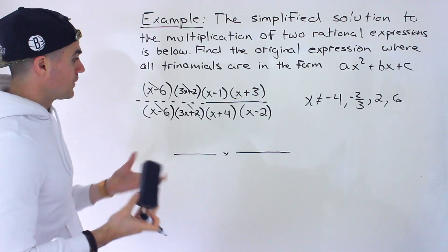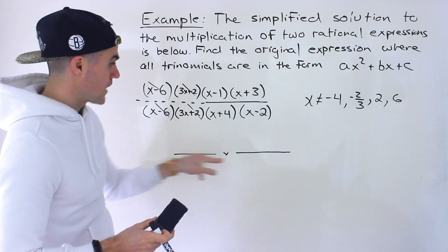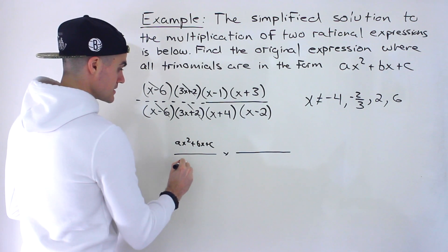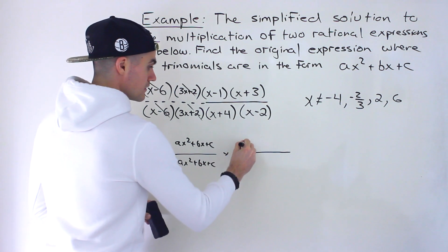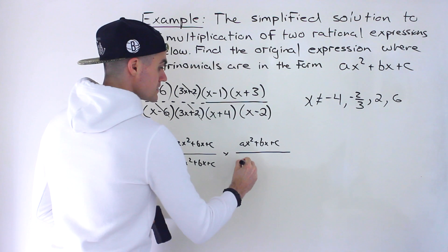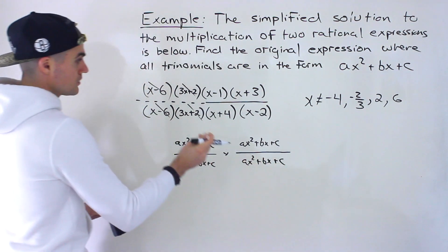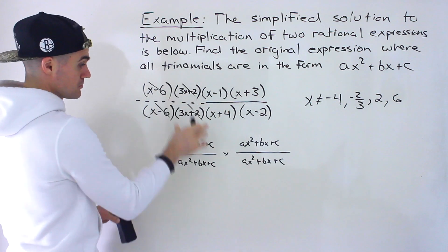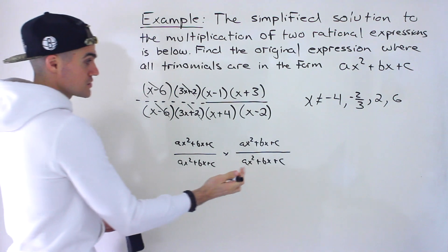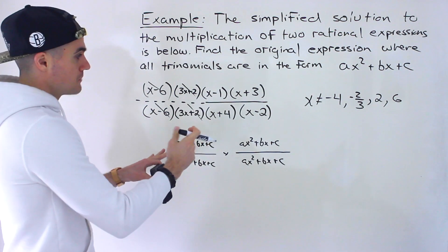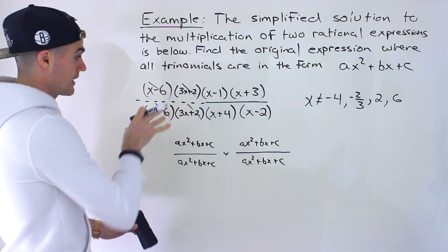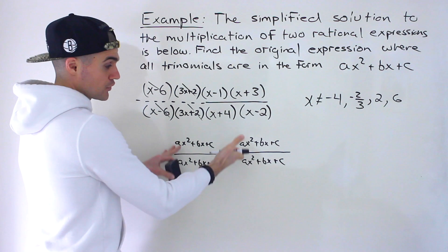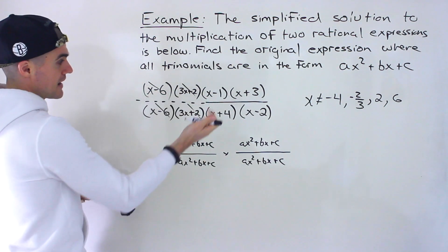Really all we have to do is create two rational expressions where we distribute the four factors — numerator factors and denominator factors — across both fractions. We have four factors total in both the numerator and denominator, so that means there are going to be two factors in each position. The way we mix and match them doesn't really matter — there are actually multiple different original expressions that can come from this because you can mix and match however you want.